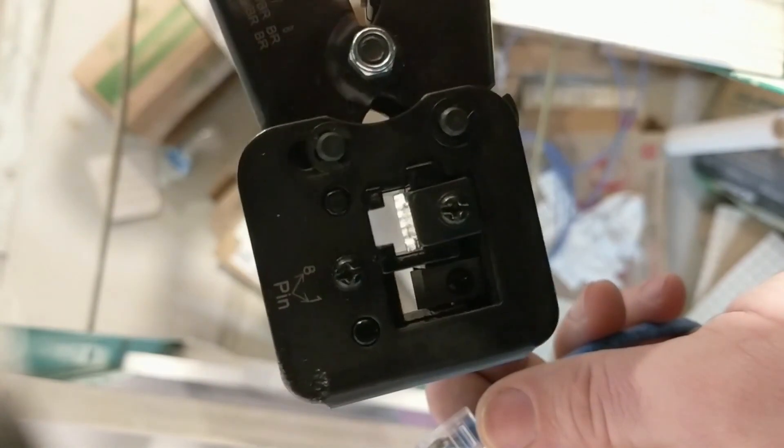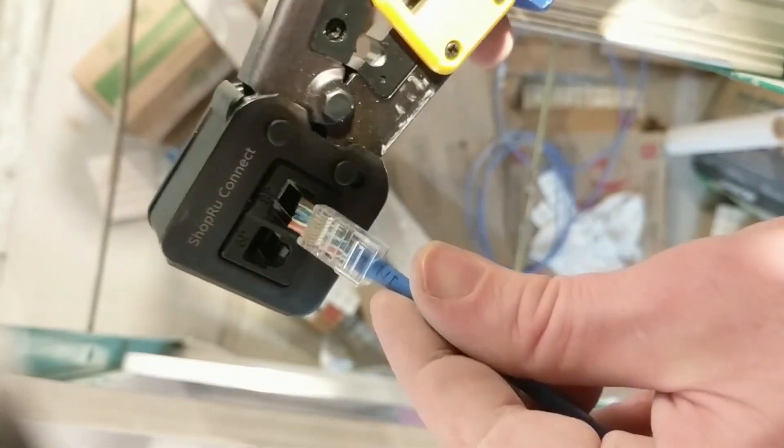This is the way the crimp tool works. It's got a blade here and it's ratcheting and it clamps down, so you just put it in. This particular one does phone and data.